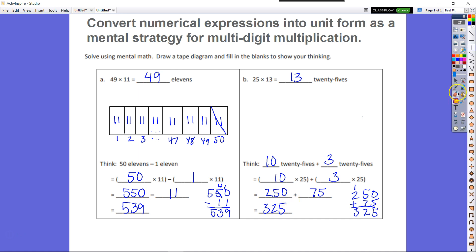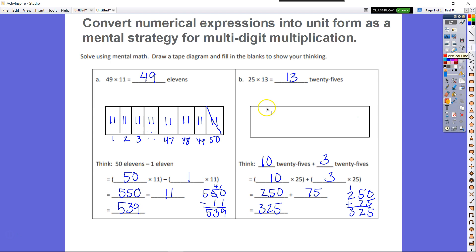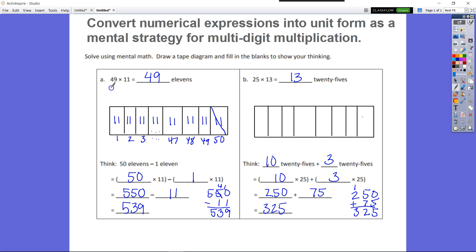Alright, so let's draw our tape diagram. Alright, similar to what we did in our A problem, we want to go ahead and set up our tape diagram in a similar fashion. We have, this time I chose to have 4 after my dot dot dot. So I have 1, 2, 3, 4 sets of 25s after my dot dot dot.